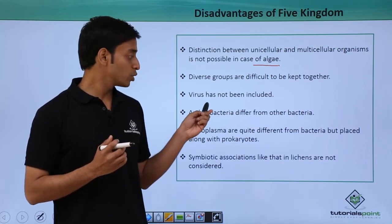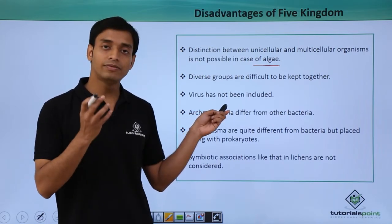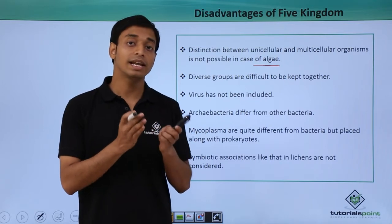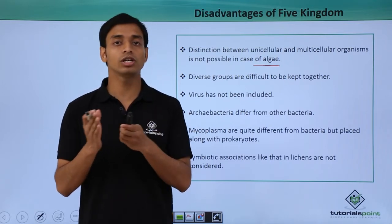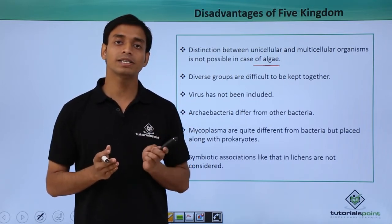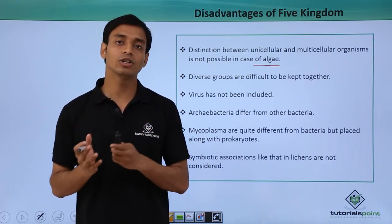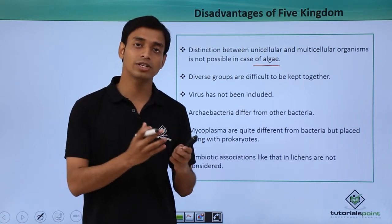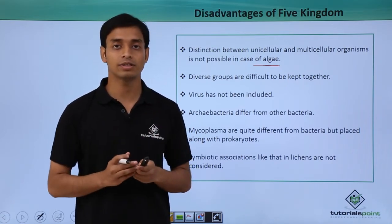Archibacteria differ from normal bacteria in many ways — they are physiologically also different. However, these archibacteria are included together with the bacteria or the prokaryotes, which is another limitation of the Five Kingdom Classification.